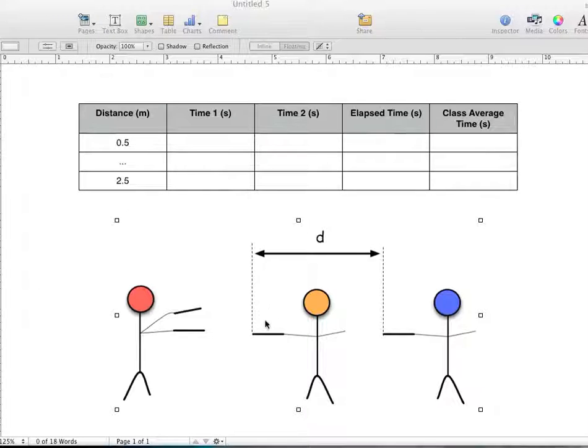Time 1 will be the time when the sound reached microphone 1, and time 2 will be the time when the sound reached microphone 2. When you subtract those two times, you will get your elapsed time.